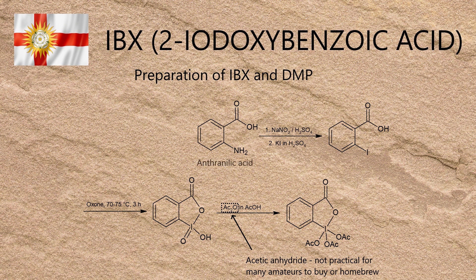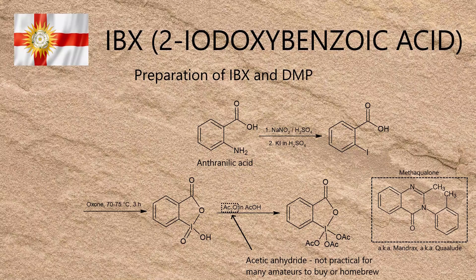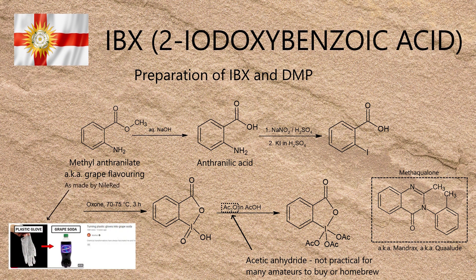The starting material is anthranilic acid. This is not easy for amateurs to find, because it's used in the illicit manufacture of methaqualone. Its ester, methyl anthranilate, is much easier to find, as it's used as a fragrance ingredient and a flavouring agent, and there are plenty of websites that cater to fragrance home crafters. NileRed famously made methyl anthranilate from plastic gloves, with anthranilic acid as the final intermediate. I didn't have the time or the patience to reproduce that process myself, so I just bought some instead.